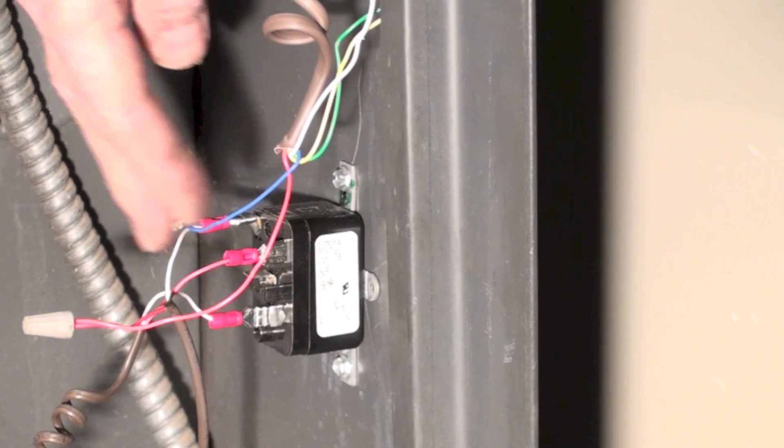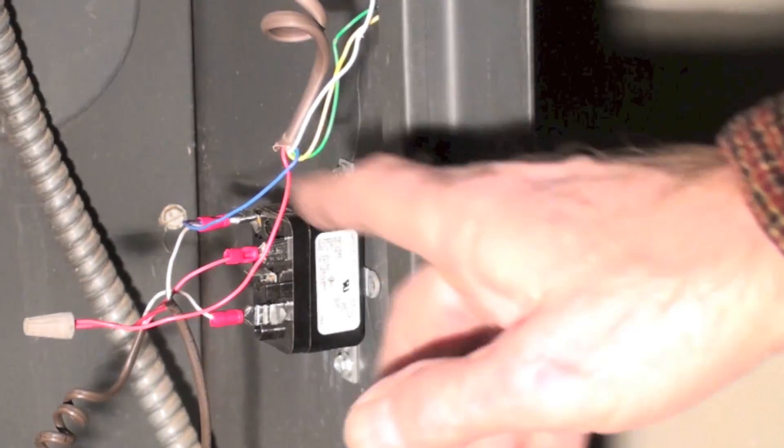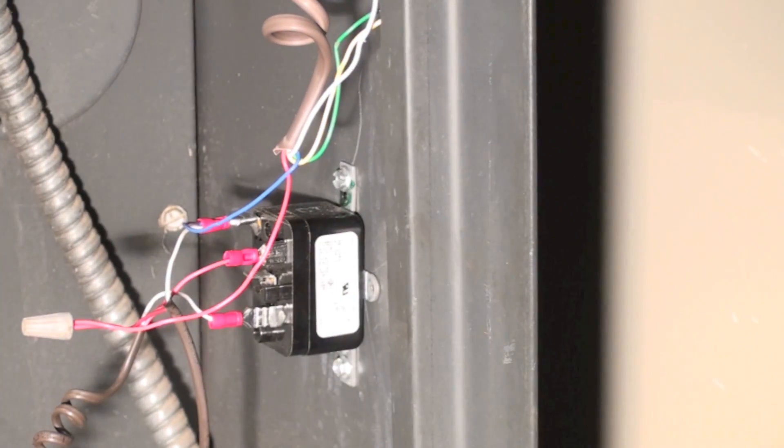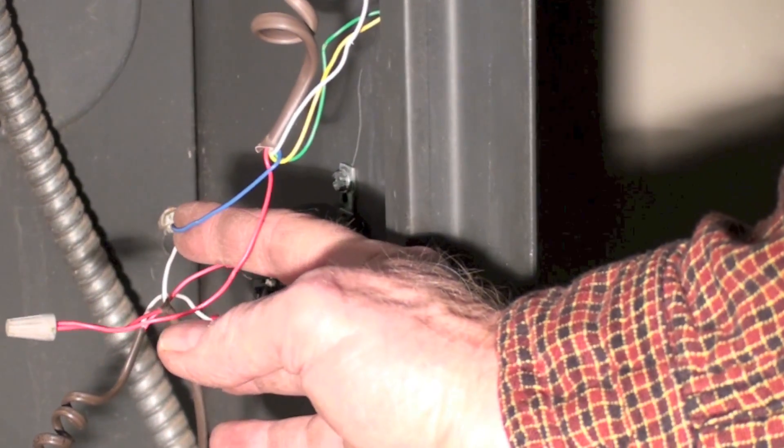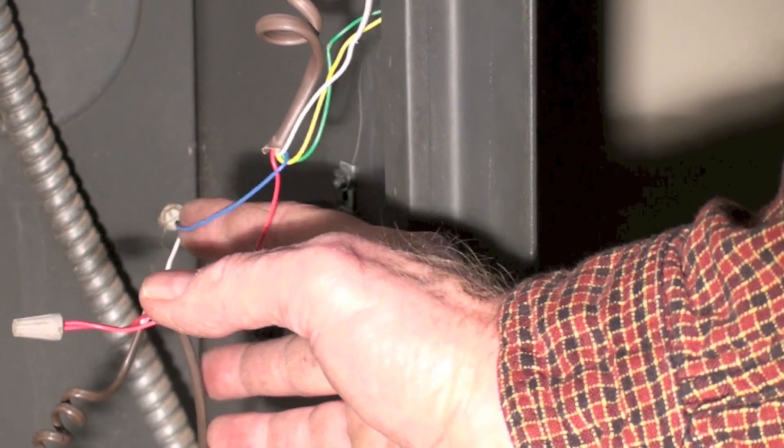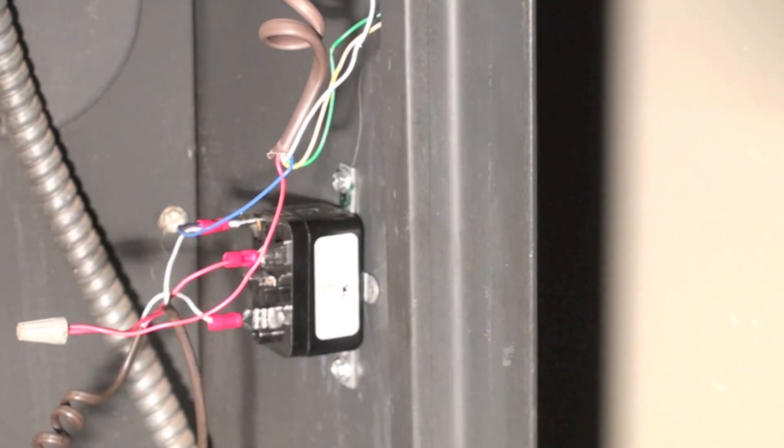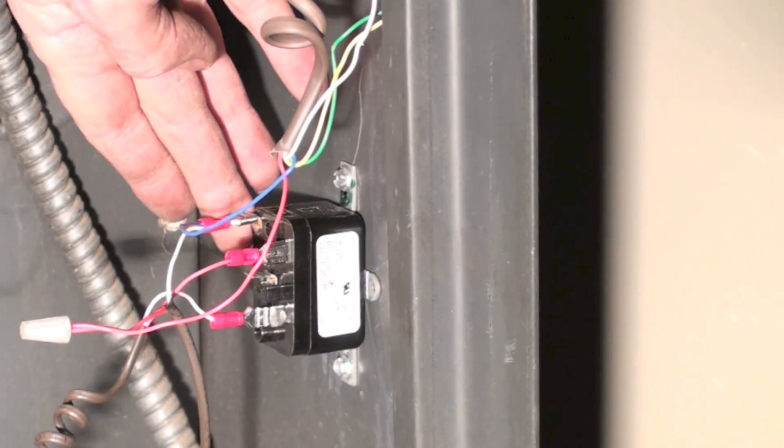And I've also got from that white, I've also got a common going up to the thermostat. This is where we're going to get the common going to the thermostat. I've used blue because I've got a green, I've got a yellow, I've got a white, and all those are going to be for other things. So I'm going to use the blue for common, so it's feeding the coil of this relay.